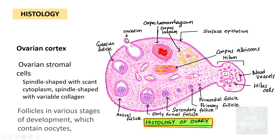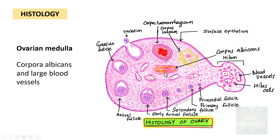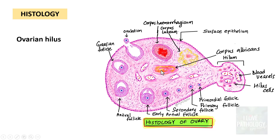Once ovulation occurs, the ovum is expelled and the follicle is converted into a hemorrhagic corpus luteum, which has a central hemorrhagic area. This matures into the corpus luteum and later forms the corpus albicans. The ovarian medulla contains corpus albicans as well as large blood vessels.